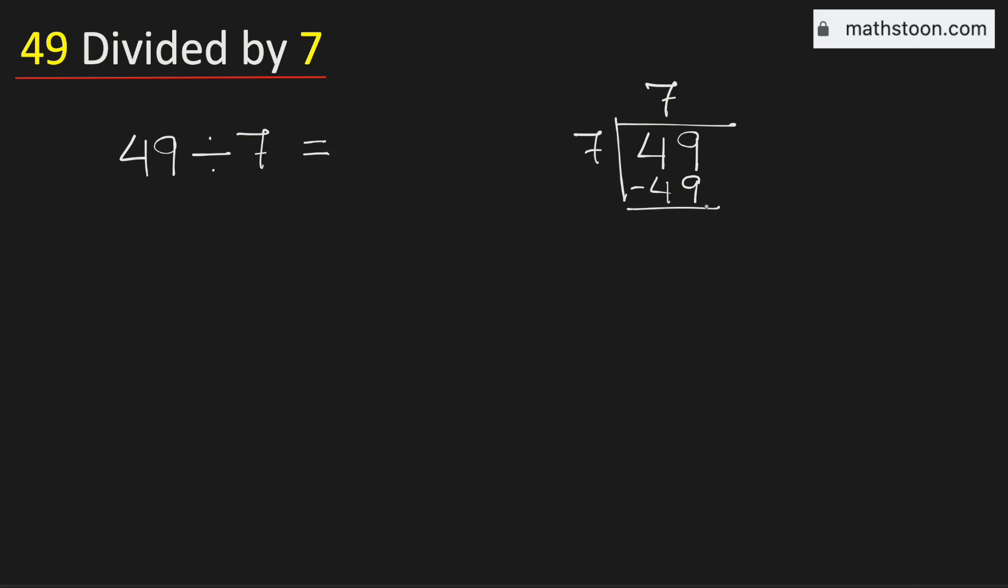Subtract, we get a 0. As we have obtained the remainder 0, so we will stop. Therefore, 49 divided by 7 is equal to 7, and this is our final answer.